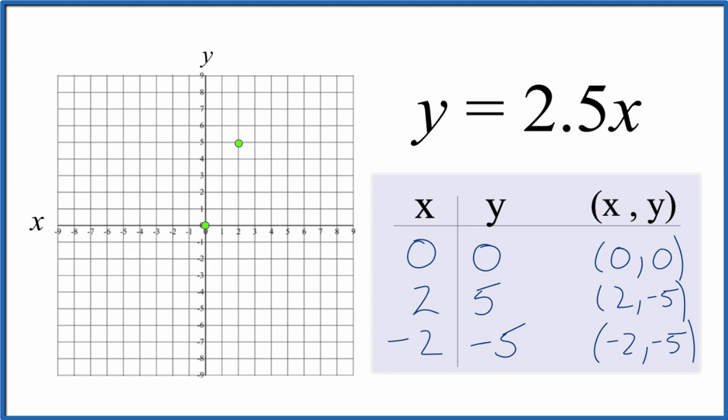And we could stop there with just two points and draw a line, but I'd like to have another point in case I made an error up here. So negative 2 for x, negative 5 for y.